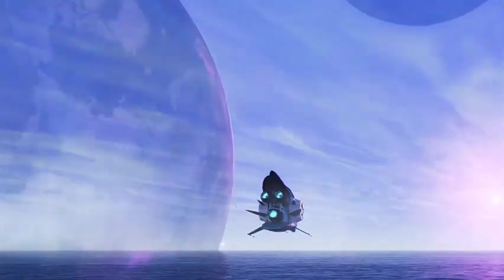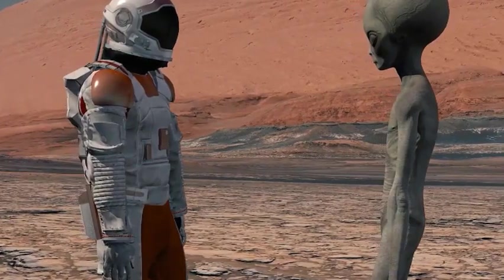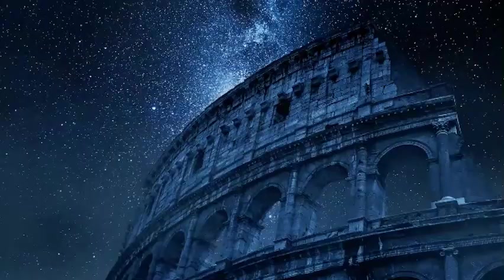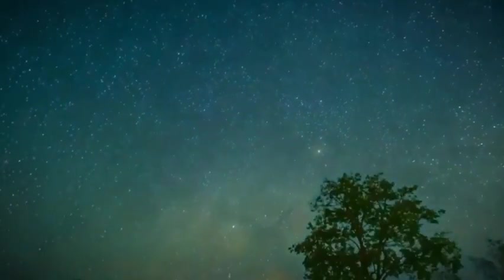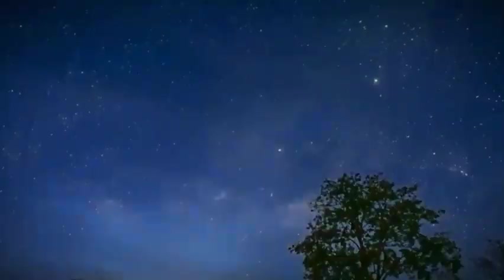Second, red supergiants are known for shedding massive amounts of material in their later stages. This process is crucial in shaping their evolution and eventual supernova explosions. Yet, how they lose this mass, at what rate, and what triggers these outbursts remain unclear.